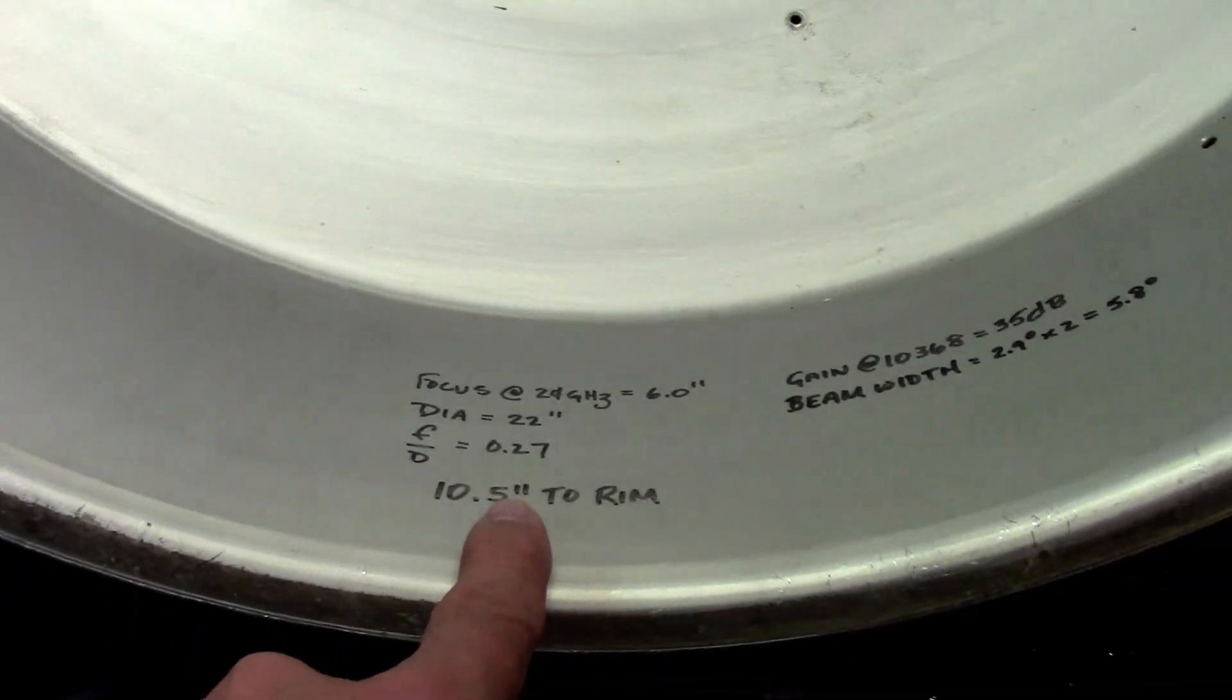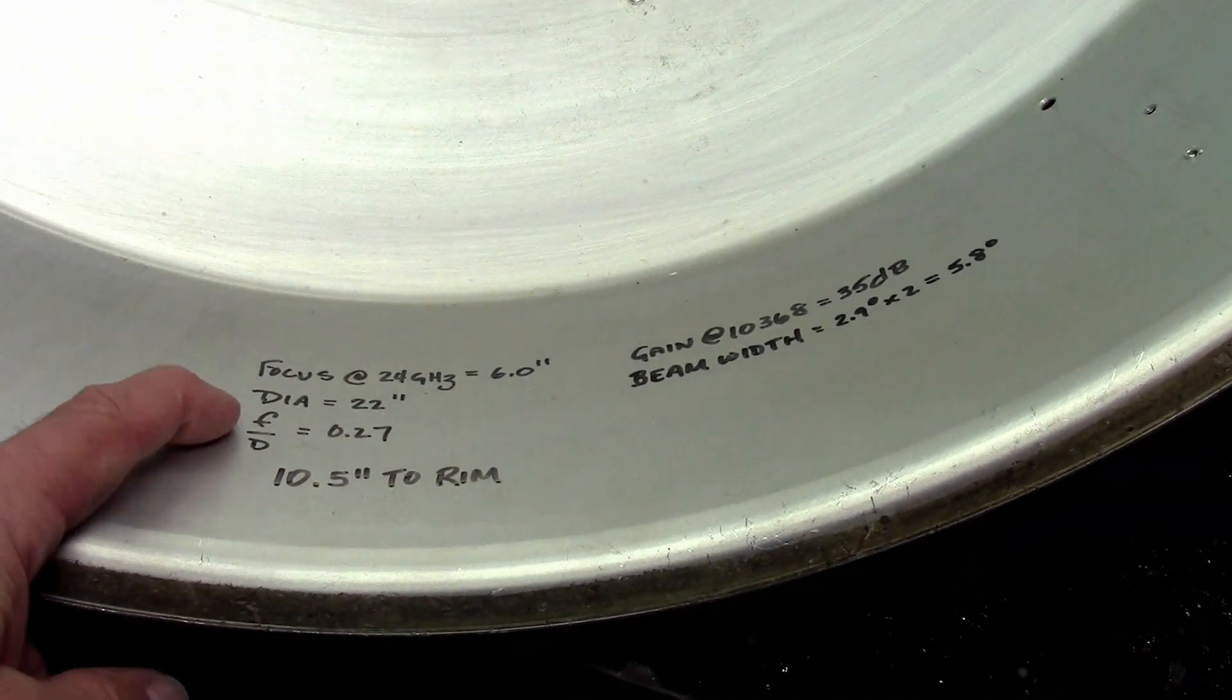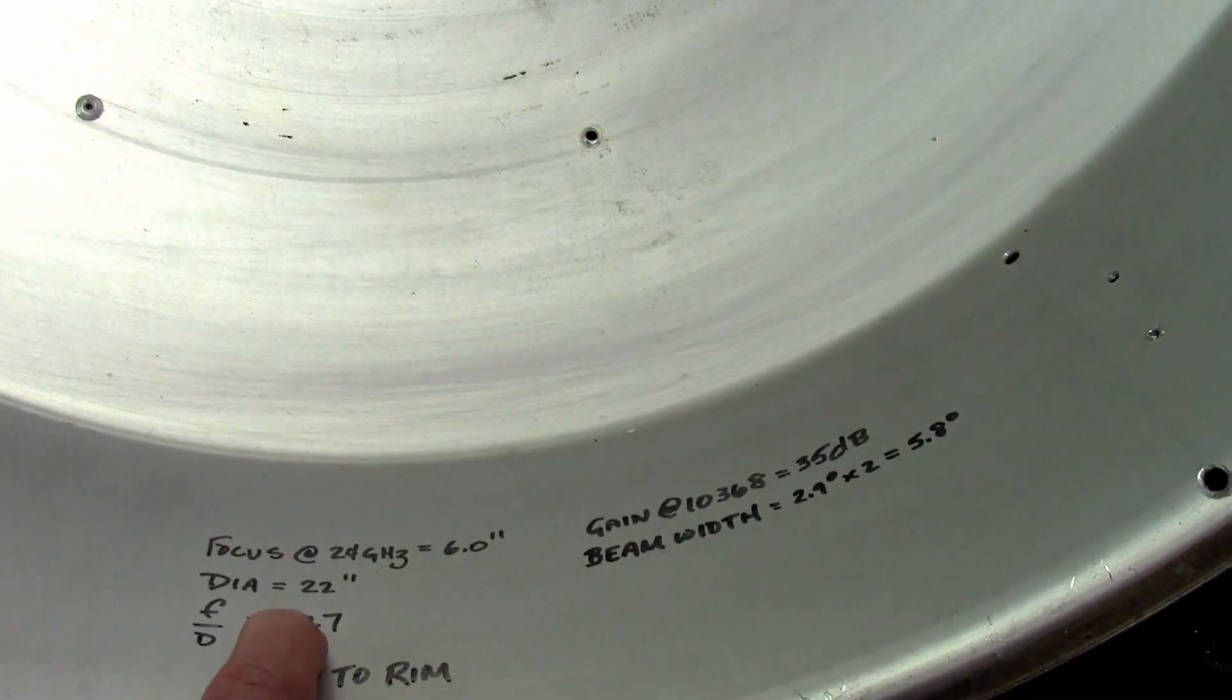6 inches. The diameter is 22 inches. The focal to diameter ratio is 0.27.